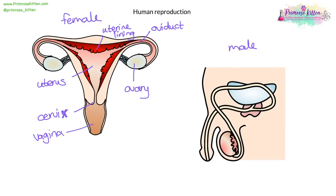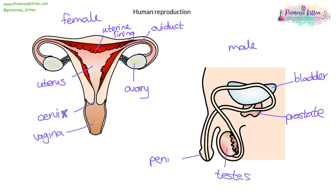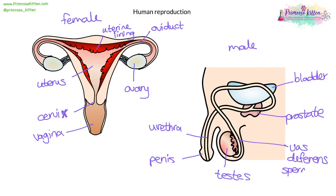In the male part, you've got the bladder, the prostate, and the testes, and the penis. This is the urethra. The one leading to the bladder is the ureter. This is the vas deferens, which is also known as the sperm duct.